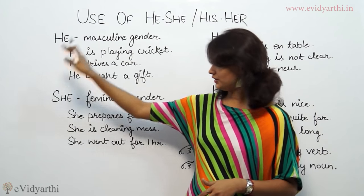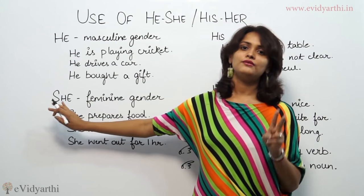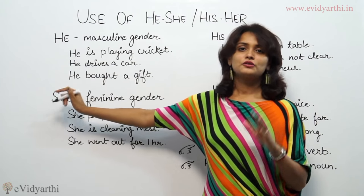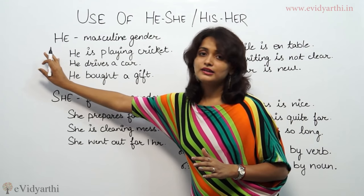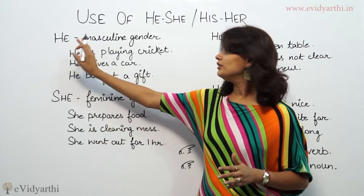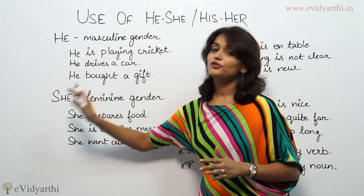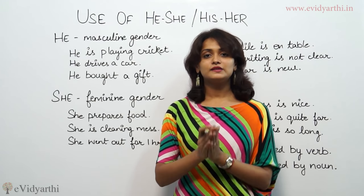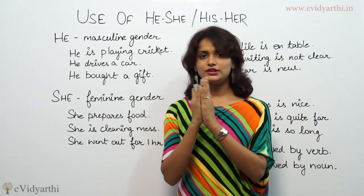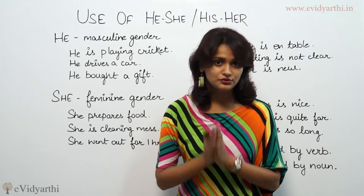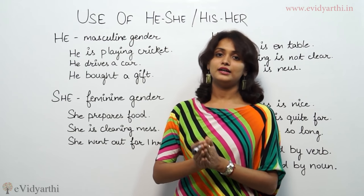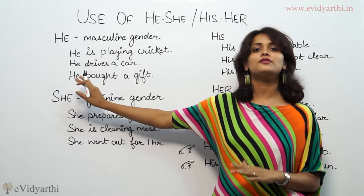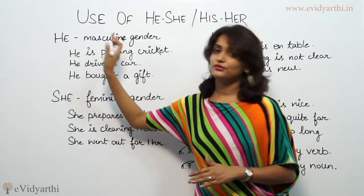So this is clear. When we use he, I am going to use she as well. The next rule is: he and she are both followed by verbs. When we use he and she as the subject — the head of the sentence, the word that starts the sentence — it is immediately followed by a verb.